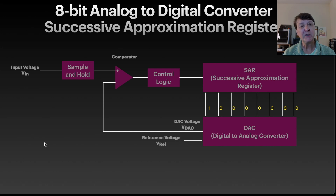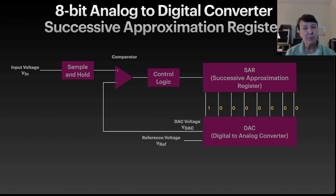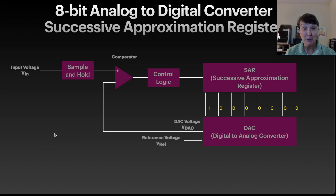I really wanted to understand how successive approximation works in an ADC. I first delved into this in a Raspberry Pi class from Paul McCorder, and I put this series of slides together to solidify my understanding. In that case I was using an 8-bit ADC rather than the 12-bit we have on the Pico, but the idea is the same and 8-bits is a little simpler to work with. This is the diagram that made the most sense to me.